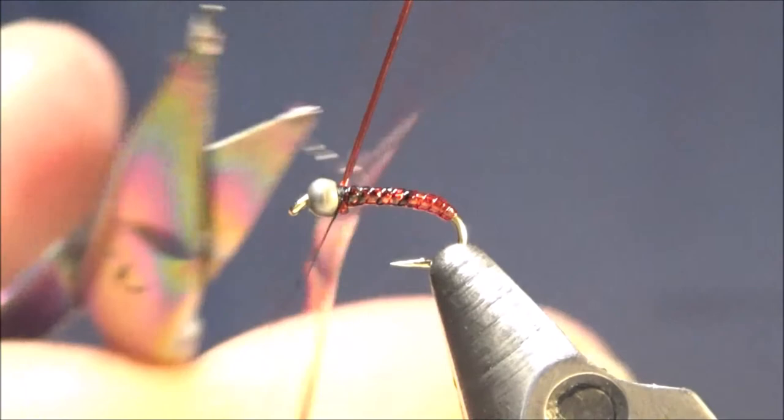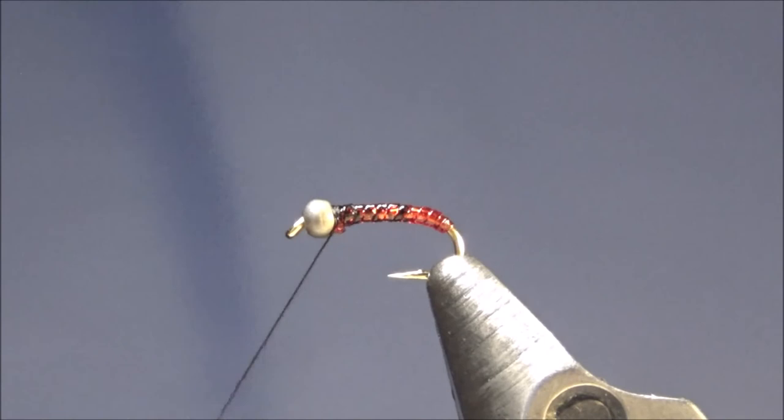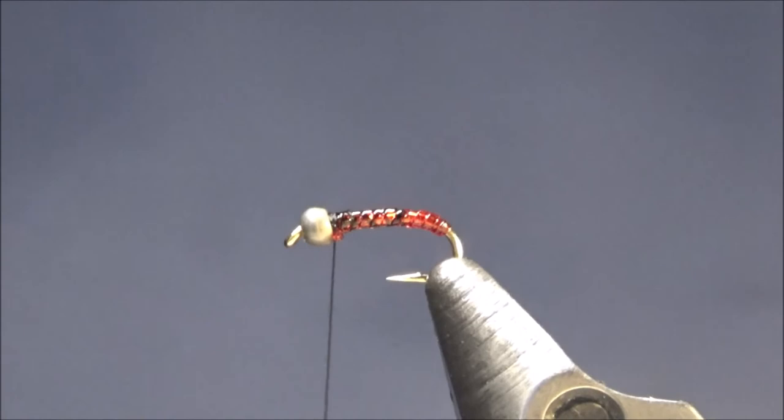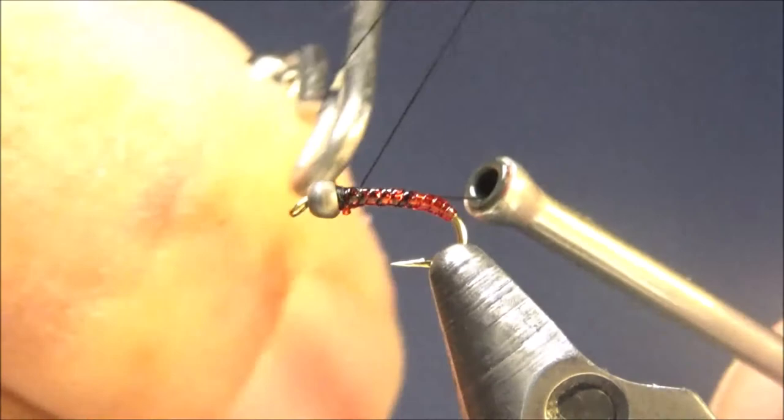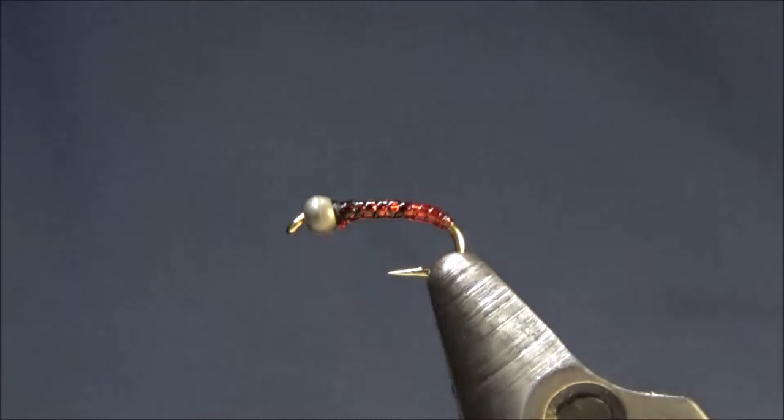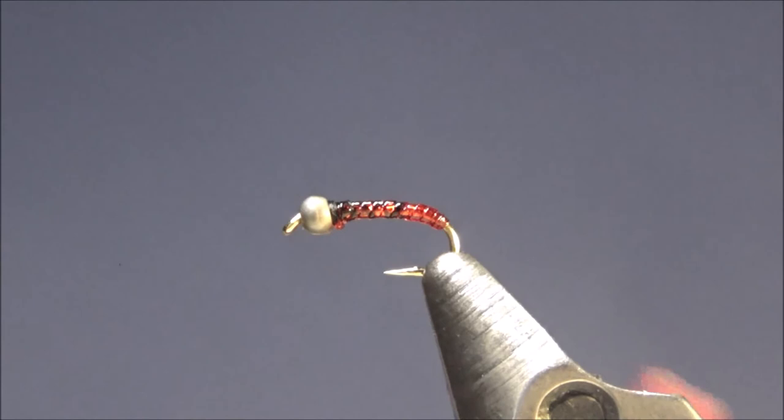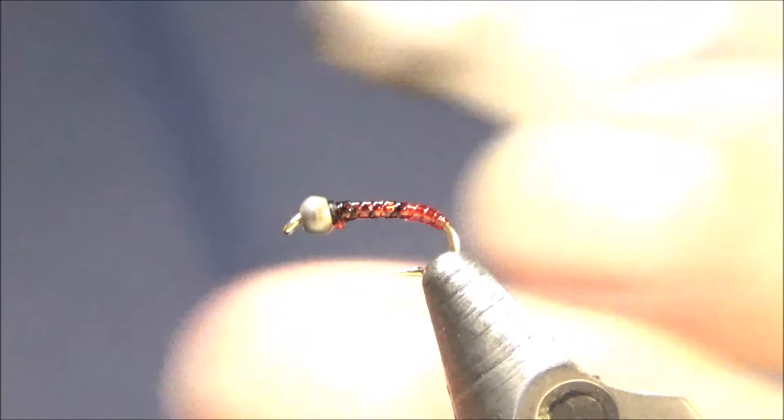Cut our tubing. We'll half hitch it, clip off our thread. We're going to put just a dab of head cement on that thread behind the bead. Put my cement on the bead, then pull it down onto the thread.